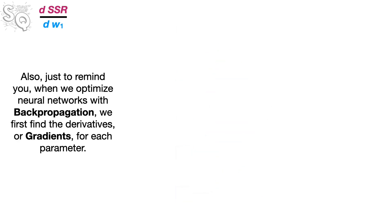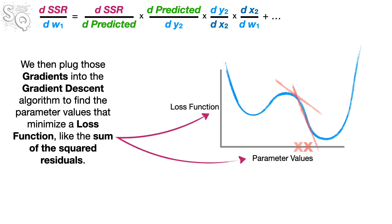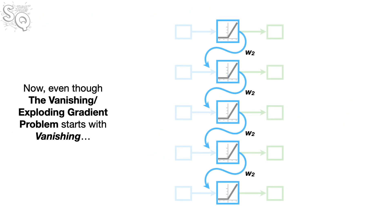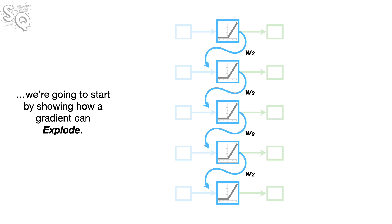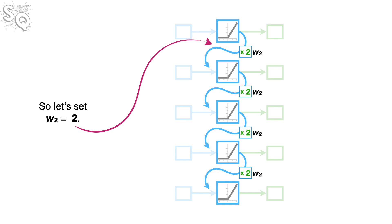Also, just to remind you, when we optimize neural networks with backpropagation, we first find the derivatives, or gradients, for each parameter. We then plug those gradients into the gradient descent algorithm to find the parameter values that minimize a loss function, like the sum of the squared residuals. Bam! Now, even though the vanishing-slash-exploding-gradient problem starts with vanishing, we're going to start by showing how a gradient can explode. Kaboom! In our example, the gradient will explode when we set W sub 2 to any value larger than 1. So let's set W sub 2 equal to 2.